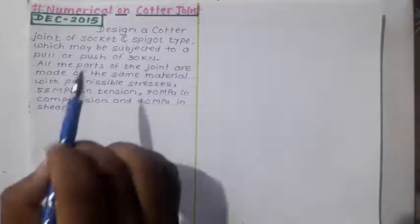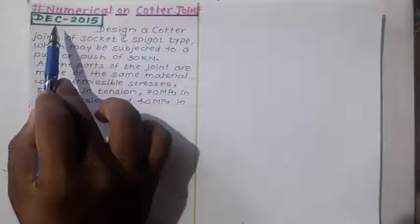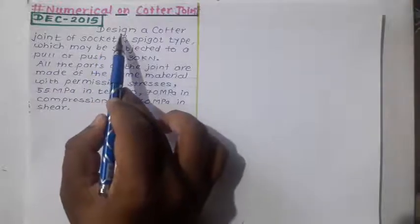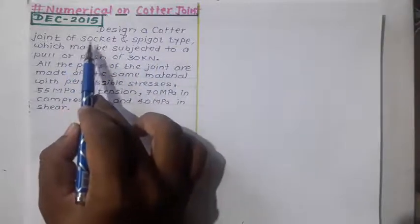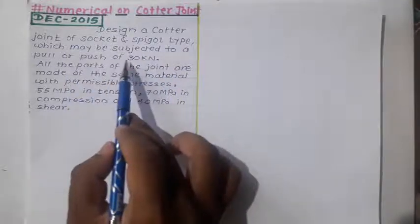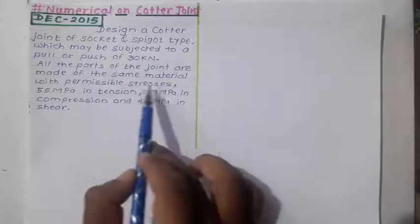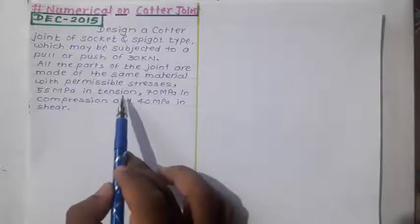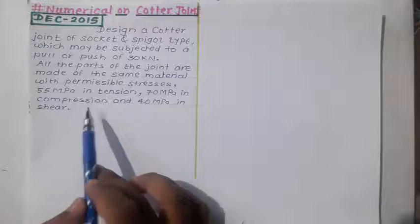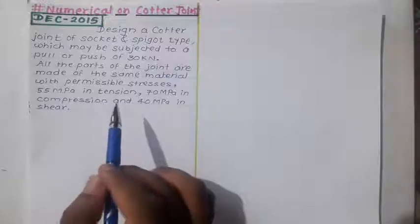Welcome. In this video we will solve a numerical on cotter joint. This numerical is asked in the university examination December 2015. The problem statement: design a cotter joint of socket and spigot type which may be subjected to a pull or push of 30 kilonewton. All parts of the joint are made of the same material with permissible stresses — 55 MPa in tension, 70 MPa in compression, and 40 MPa in shear. We have to design this cotter joint.